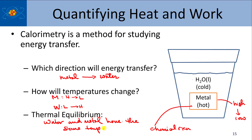Thermal equilibrium means the water and metal will reach the same temperature. Since the metal starts out hot and ends up at a lower temperature, its change in temperature is going to have a negative sign. Temperature is a state function, so a negative delta T means it ended at a lower temperature. For the water, because it's absorbing energy, its delta T will go from low temperature to somewhere in the middle — it'll have a positive sign, and it'll be absorbing energy.